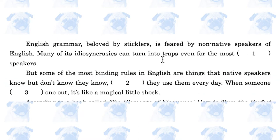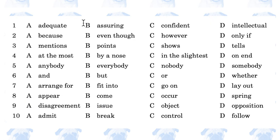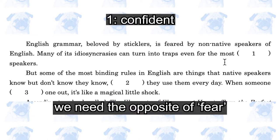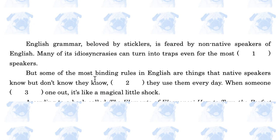Many of its idiosyncrasies can turn into traps even for the most blank speakers. The options are: adequate, assuring, confident, intellectual. The previous sentence is about the fear of English grammar among non-native speakers, so the answer is 'the most confident speakers.' But some of the most binding rules in English are things that native speakers know, but don't know they know.